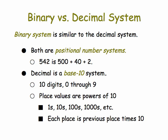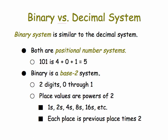The binary system works the same way — its digits have a value that is represented by their position. So in 101, the first digit on the left has a place value of 4, whereas the 1 on the right has a place value of 1. Because the binary system is a base 2 system, it has two digits, 0 and 1. Its place values are powers of 2: the 1's place, the 2's place, the 4's place, the 8's place, and so on, where each place value is the previous place times 2.